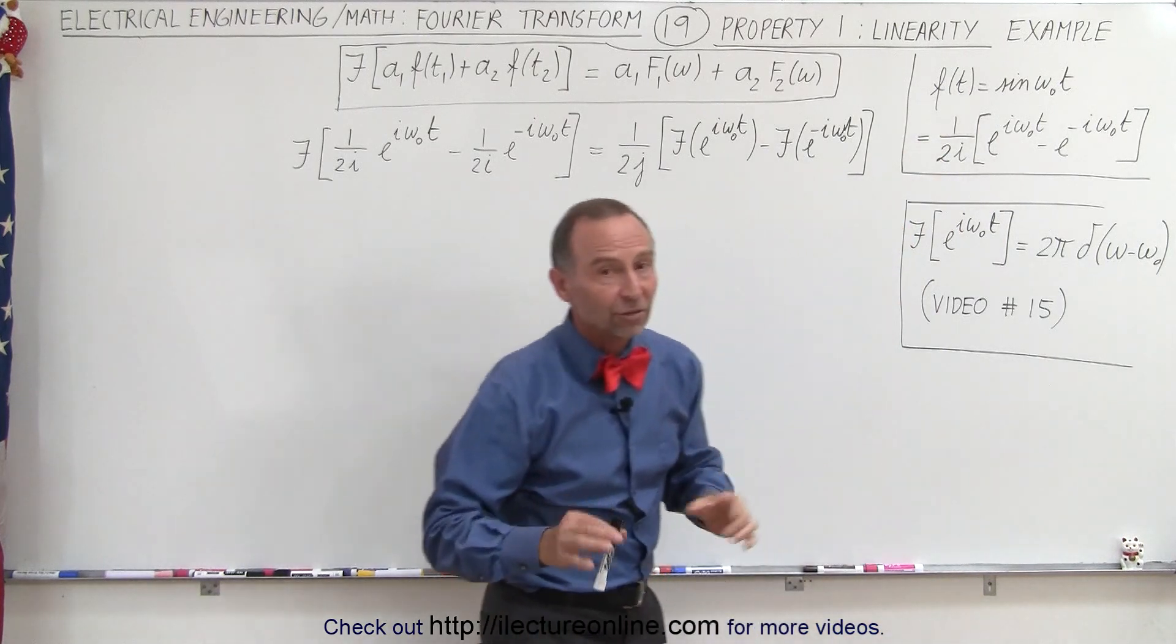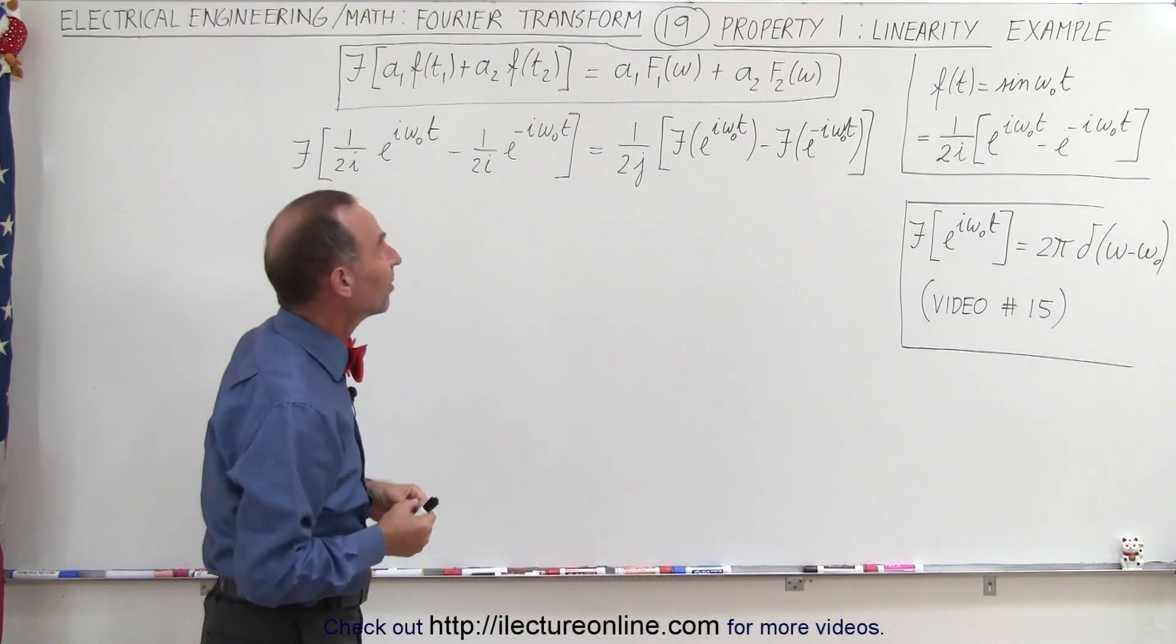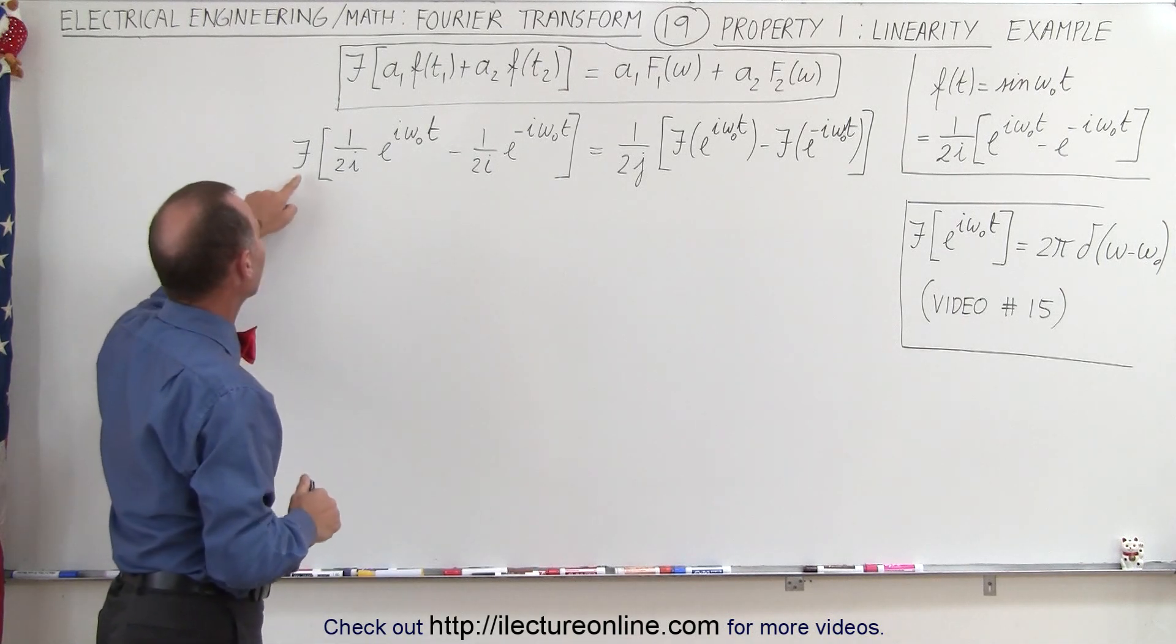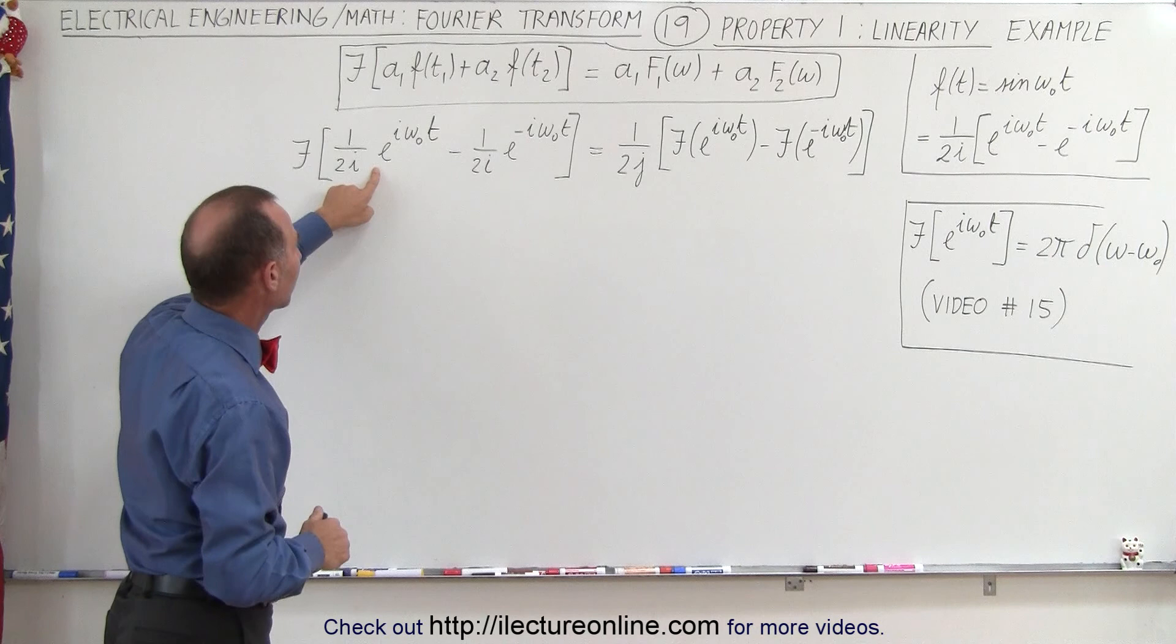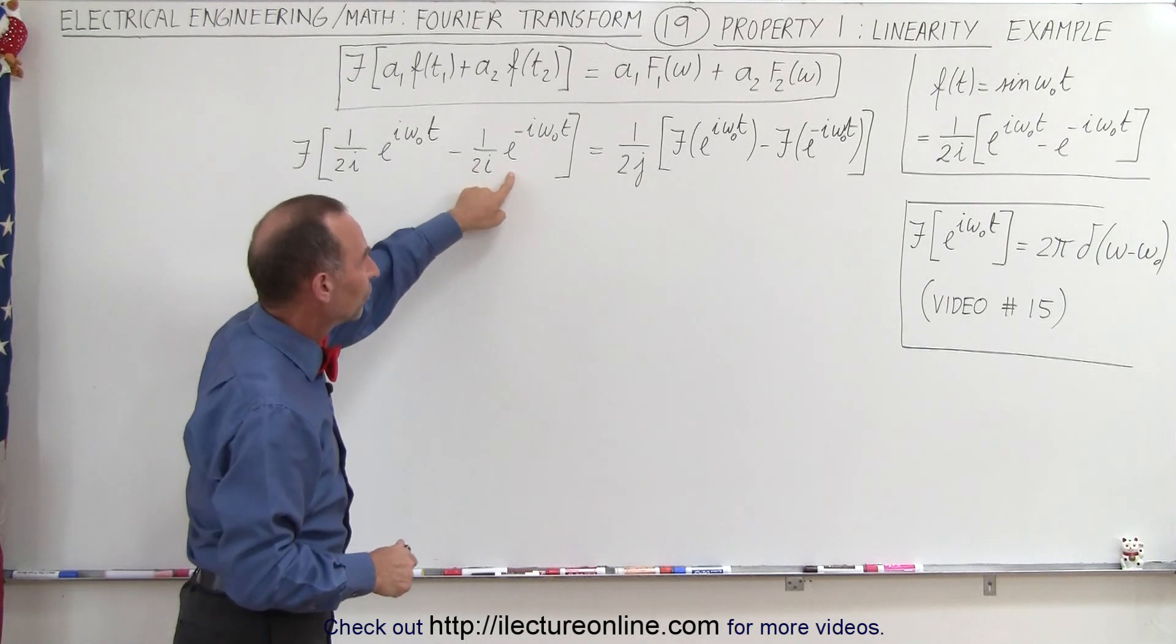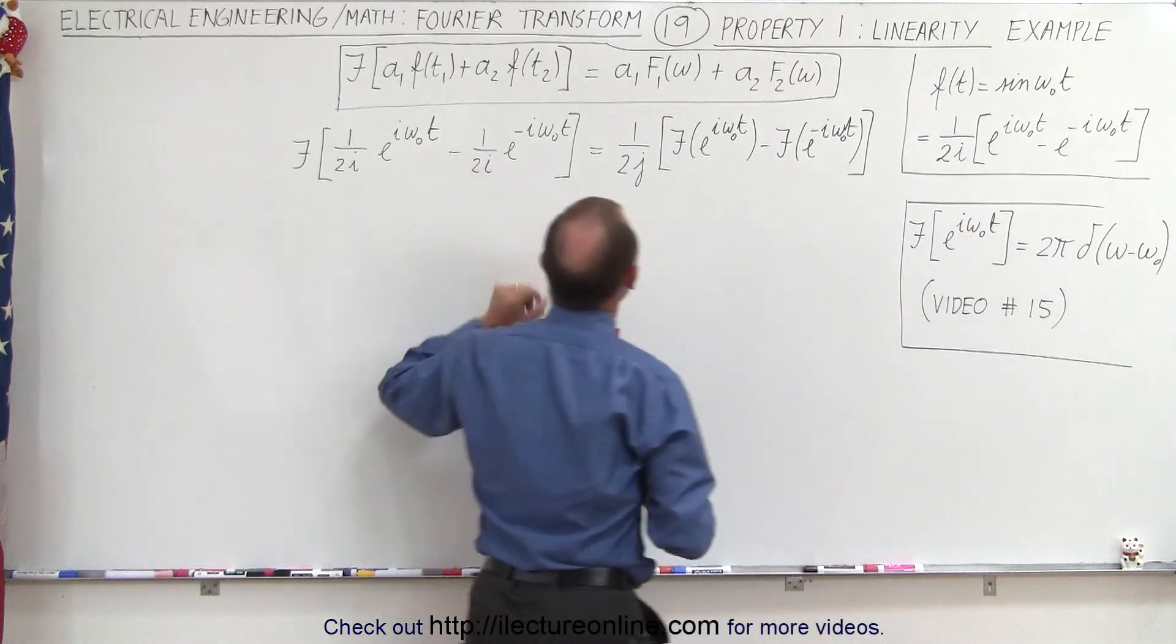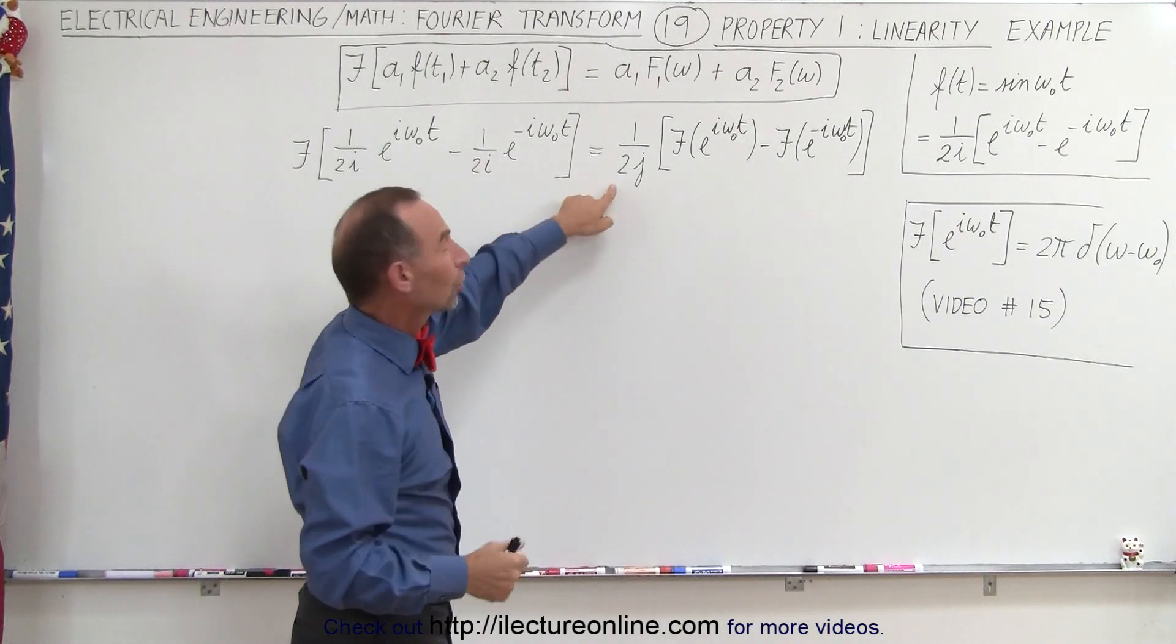In this case the constants a1 and a2 happen to be the same, so we can factor it out. If we take the Fourier transform of the first input function and the second input function, notice we have a negative sign here because there's a negative sign there, then the result will look like this.